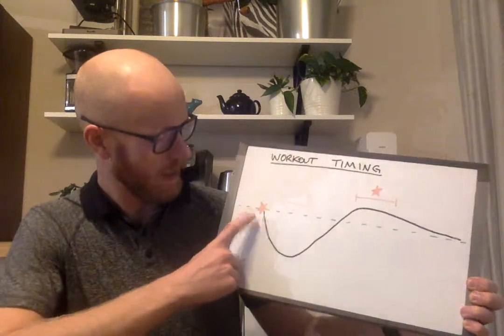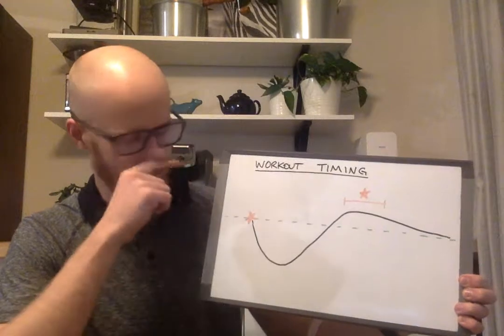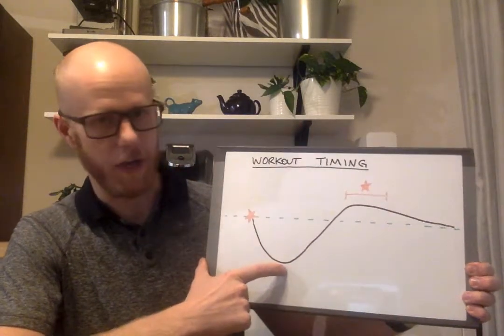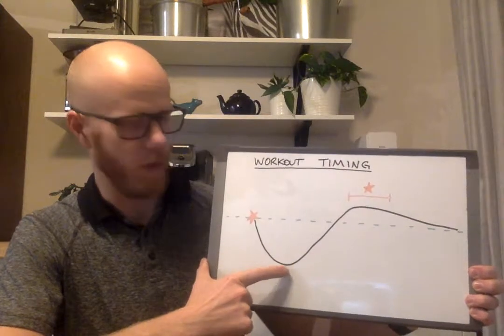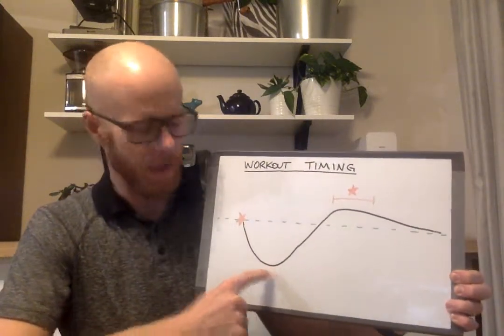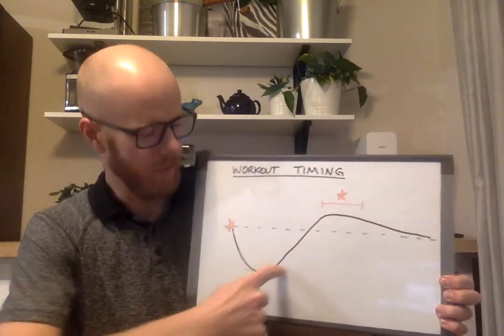So what happens is you do your workout and then this black line is actually what your fitness does when you do your workout. So your fitness goes down, you have broken your body down and you're down in a hole here. From there you start to build your body back up. So you've done that initial damage and then your body will slowly recover, fitness will get better.